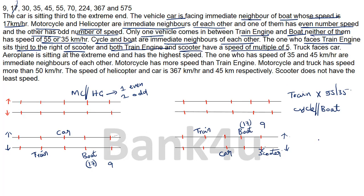Both train and scooter must have speeds that are multiples of five. Truck faces car — car is already placed — so truck must be at the position directly opposite car. Truck is now fixed.